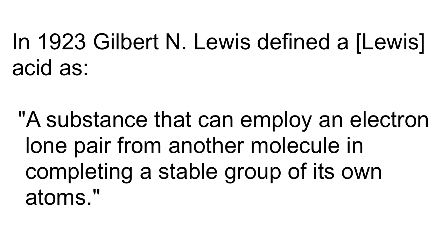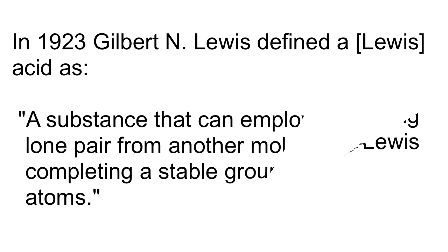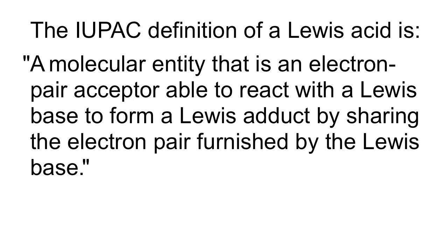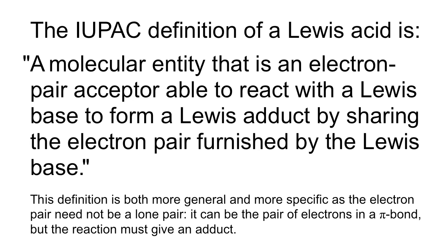In 1923, Gilbert Newton Lewis defined a Lewis acid as a substance that can employ an electron pair from another molecule in completing a stable group of its own atoms. The more modern IUPAC definition of a Lewis acid is a molecular entity that is an electron pair acceptor, able to react with a Lewis base to form a Lewis adduct by sharing the electron pair furnished by the Lewis base. This definition is both more general and more specific, as the electron pair need not be a lone pair — it can be a pair of electrons from a pi bond — but the reaction must always give an adduct.